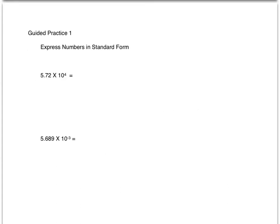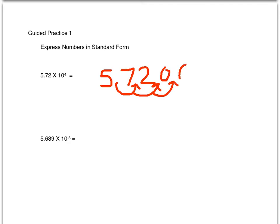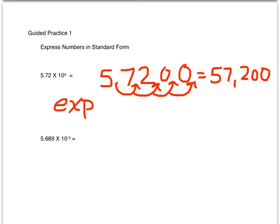Let's look at some examples together. Again, we will express numbers in standard form. 5.72 times 10 to the fourth power can be changed to standard form by moving the decimal point four places to the right. So the answer would be 57,200. We move the decimal point to the right when the exponent is positive.